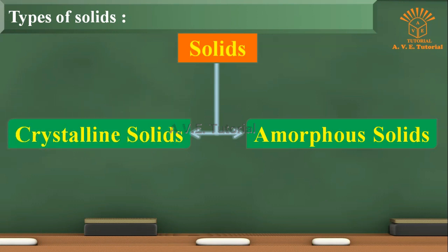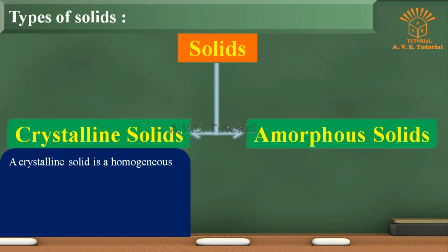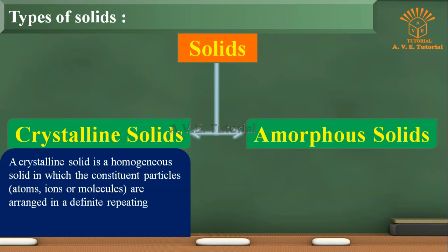Let's see what is the meaning of crystalline solid. A crystalline solid is a homogenous solid in which the constituent particles—atoms, ions, or molecules—are arranged in a definite repeating pattern. Examples: diamond, sodium chloride NaCl, and potassium chloride KCl.